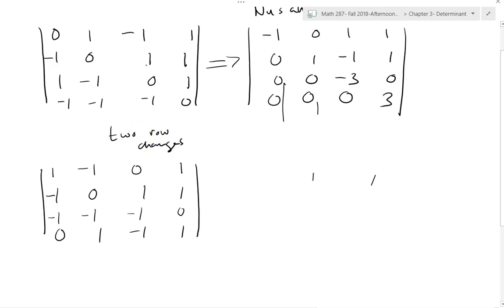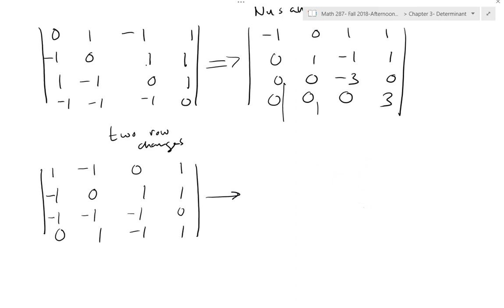Two row flips is equivalent to multiplying by 1. Every time we row flip, we multiply the determinant by negative 1, so two flips multiply by negative 1 twice. Now the next thing I need to do is elementary row operations involving adding and subtracting rows — what does that do to the determinant? It doesn't actually do anything.